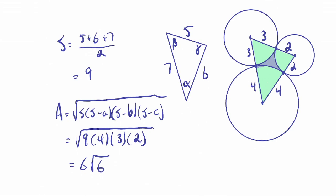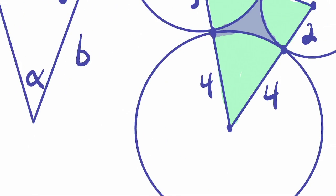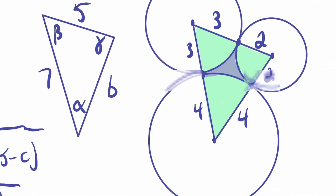So the follow-up question was, what if we really just wanted this gray area in the middle, the space between the circles, not the whole triangle, right? Well, how could we do that? If we were able to find this angle here, then we could find the area of this sector and subtract.